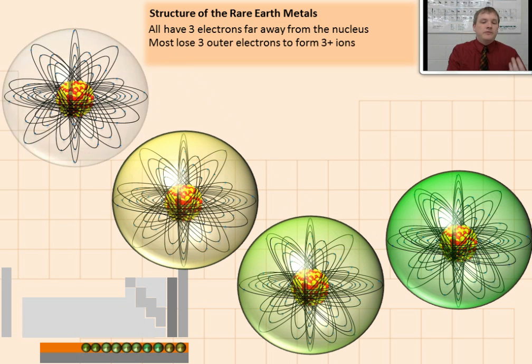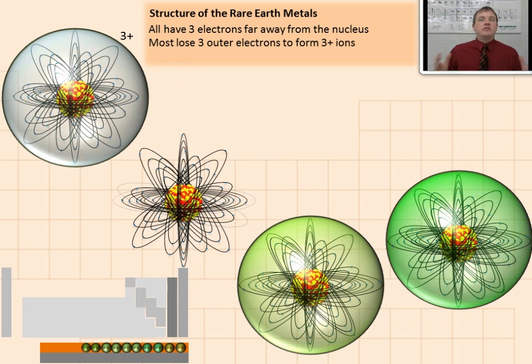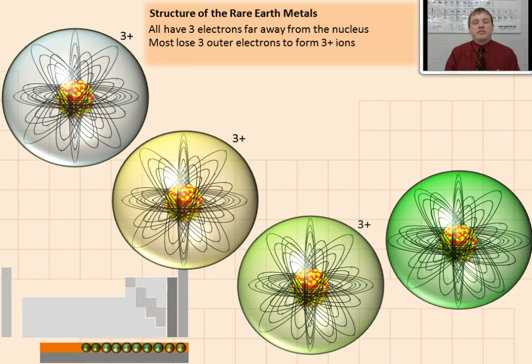When these atoms do form ions, most of them just lose three electrons to make three plus ions. In fact, all of them can lose three. It's just that some of them can lose other numbers as well. Some can lose two, some can lose four. All of them, though, are capable of forming these three plus ions that you see.